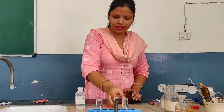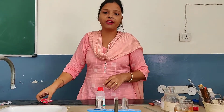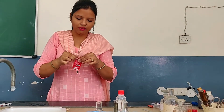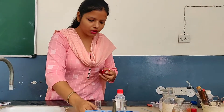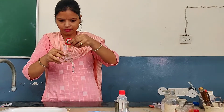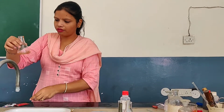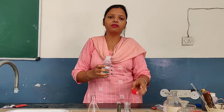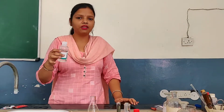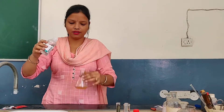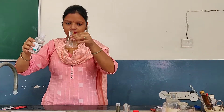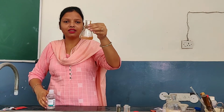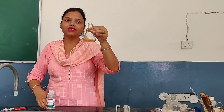Now let's perform another activity with ketchup. Let's check whether it contains an acid or a base. I will put some ketchup in water and make a solution. Now I will add phenolphthalein again. If it is an acid, it will not give any color. But if it is a base, it will give pink color. See — there is no color change. That means this is an indication of the presence of acid.